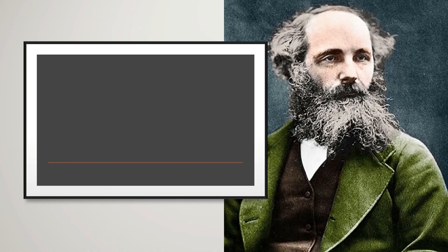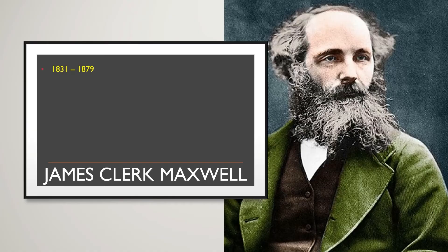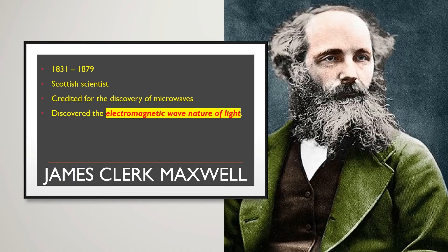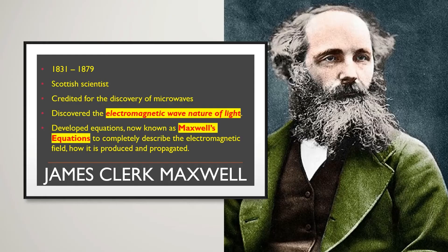The fourth scientist involved in the field of electromagnetic wave theory is James Clerk Maxwell, who was born in the year 1831 and died in the year 1879. He was a Scottish scientist credited for the discovery of microwaves, which are part of the electromagnetic spectrum. He also discovered the electromagnetic wave nature of light, and is credited for the development of the equations now known as Maxwell's equations, which completely describe the electromagnetic field based on how it is produced and propagated.